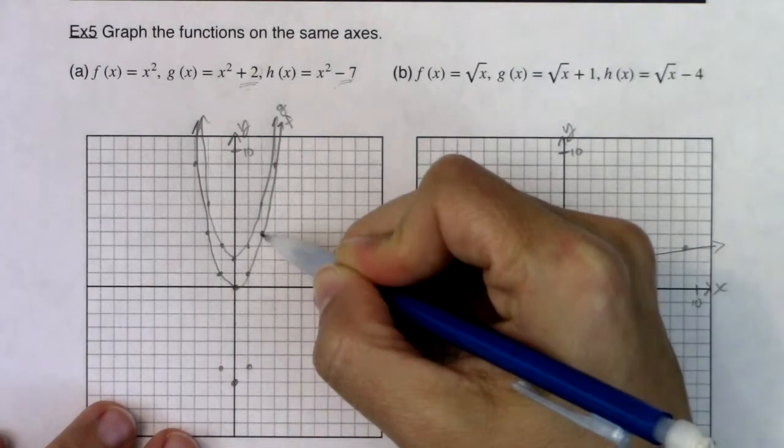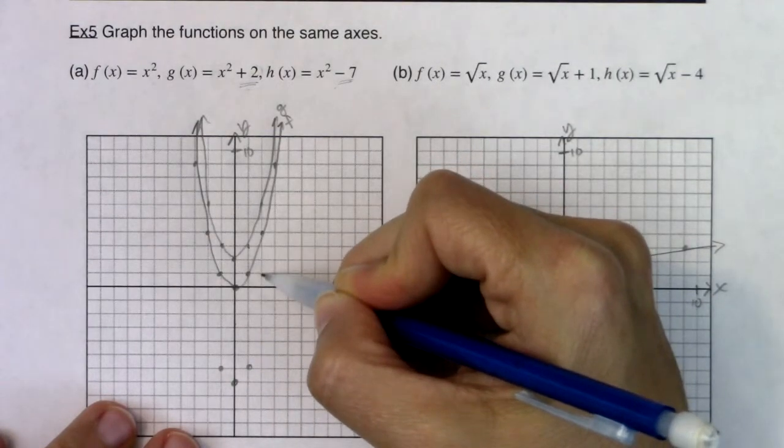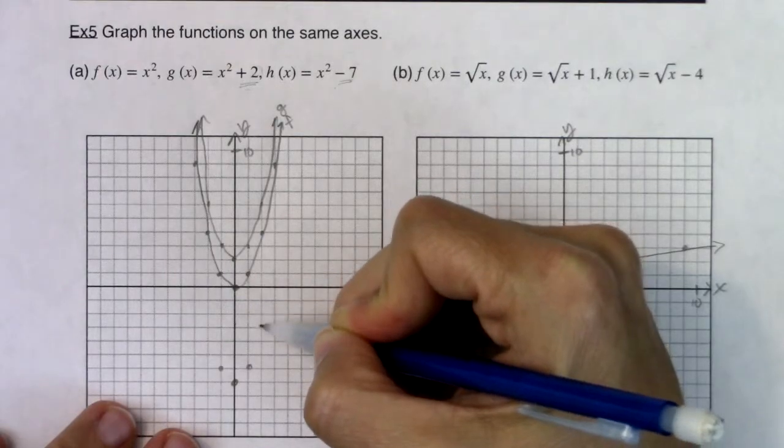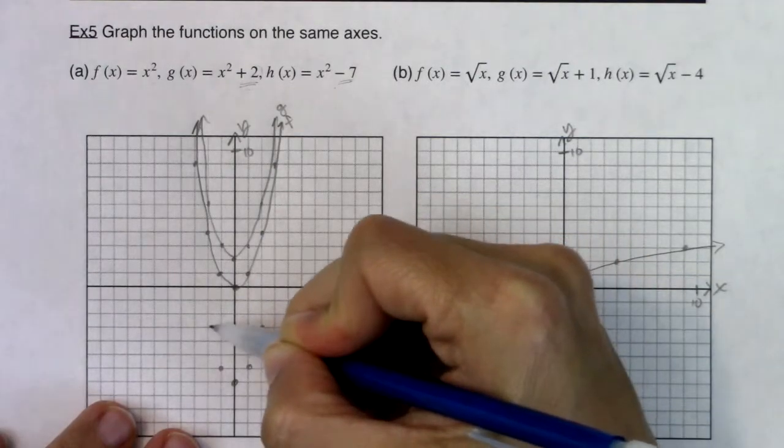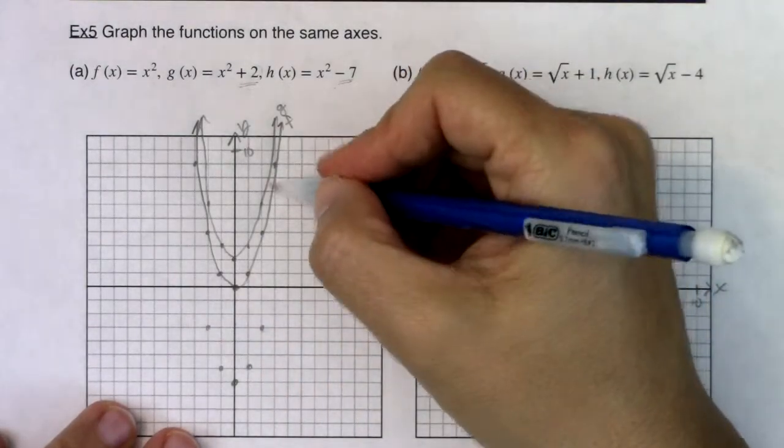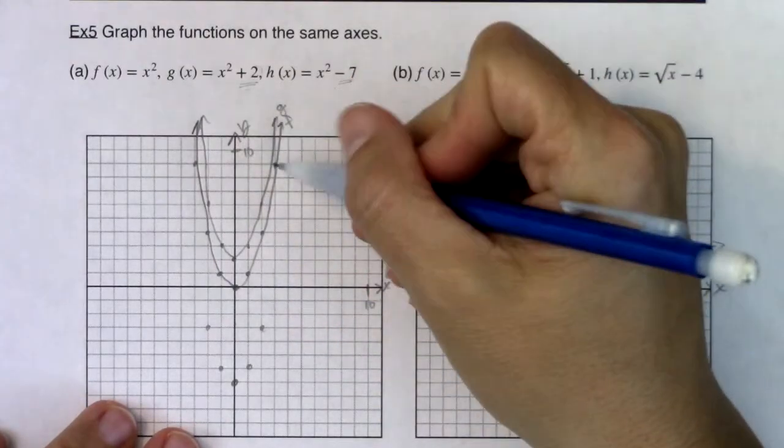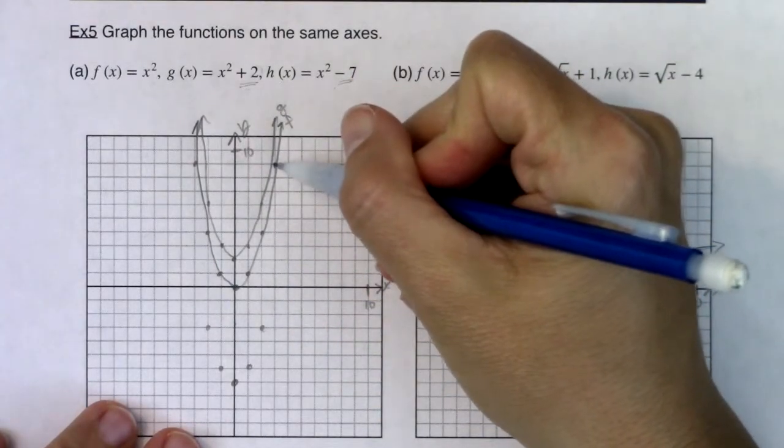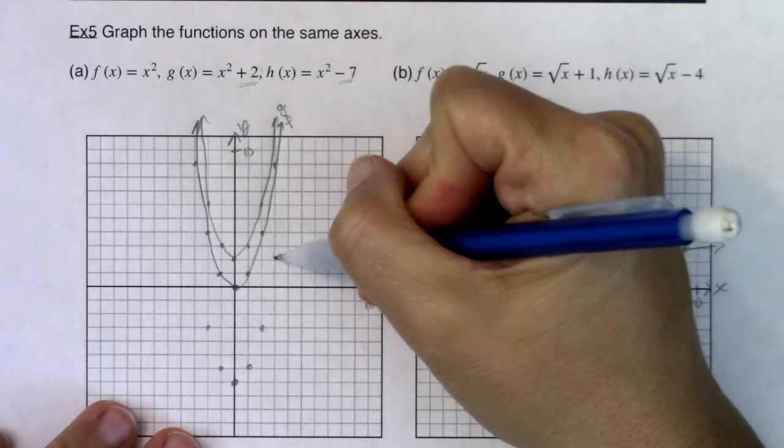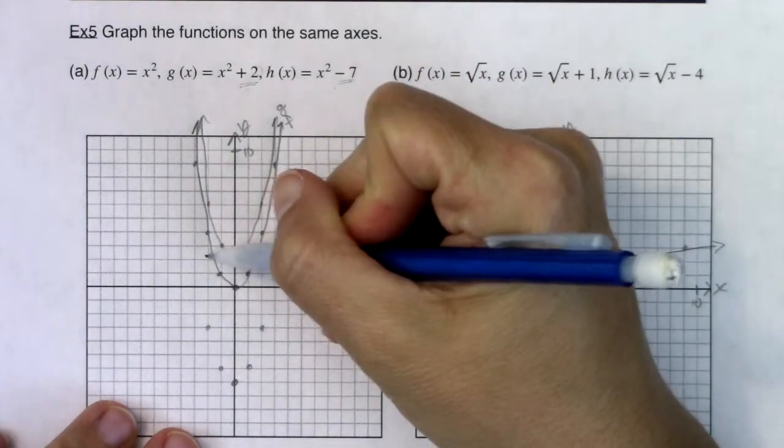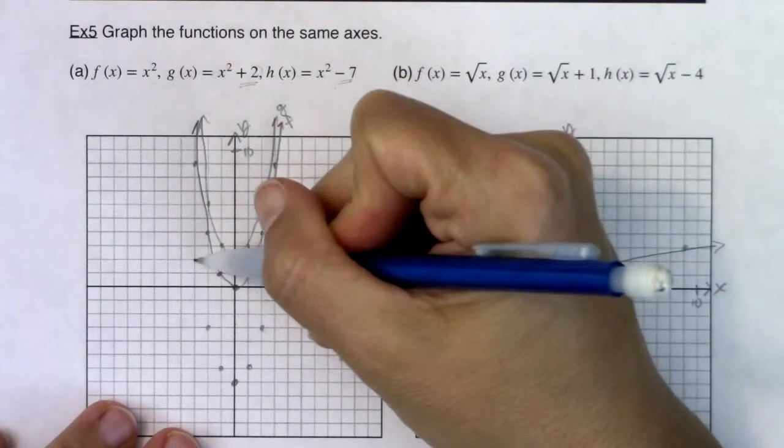And then I have some symmetry here. I'm going to go down one, two, three, four, five, six, seven. And then again, I have some symmetry. Everything gets shifted seven units down. So even here, even though this was three, nine, I'm going to go down seven units and be at two.